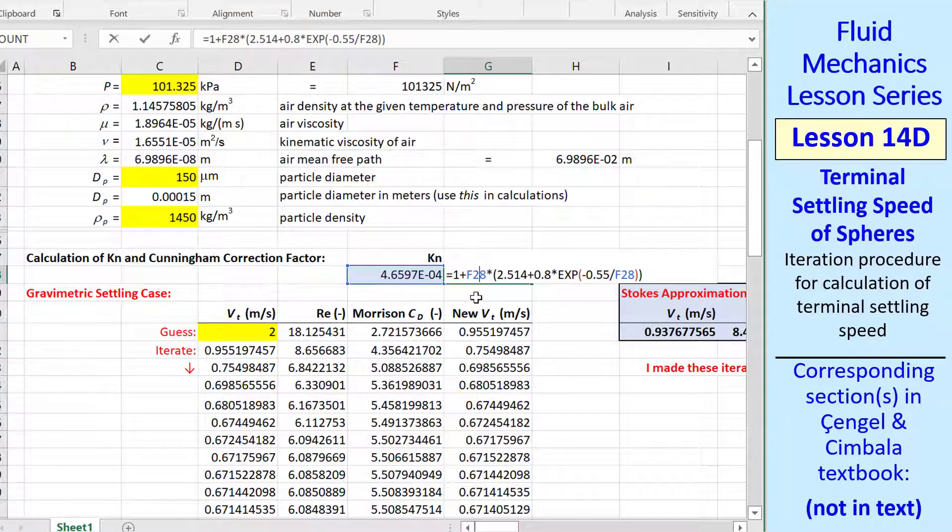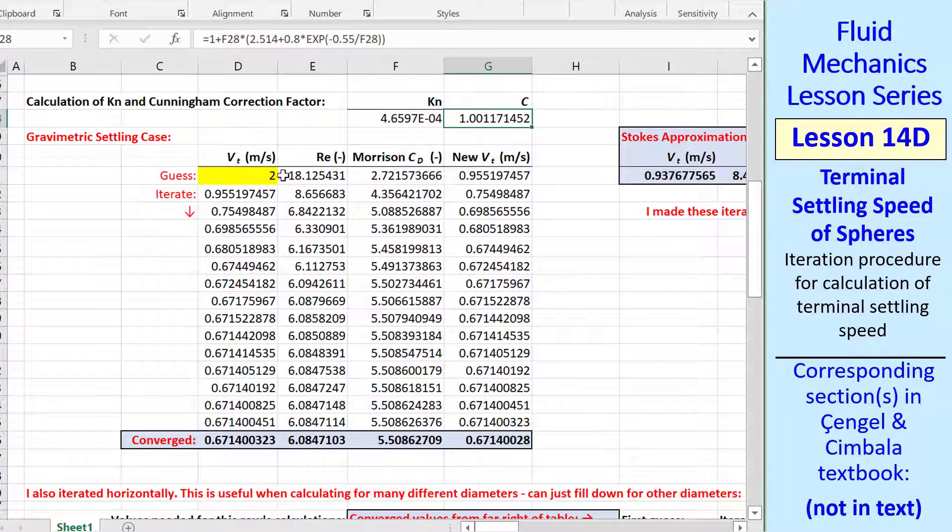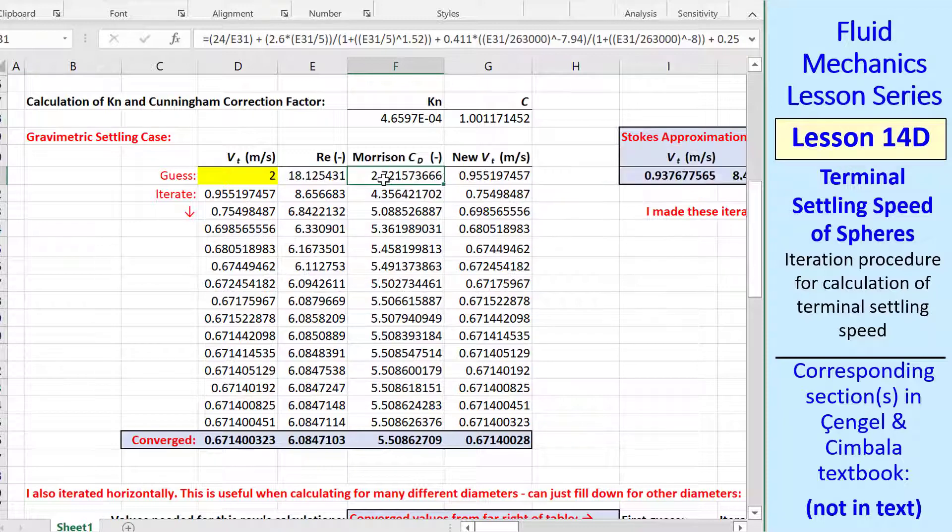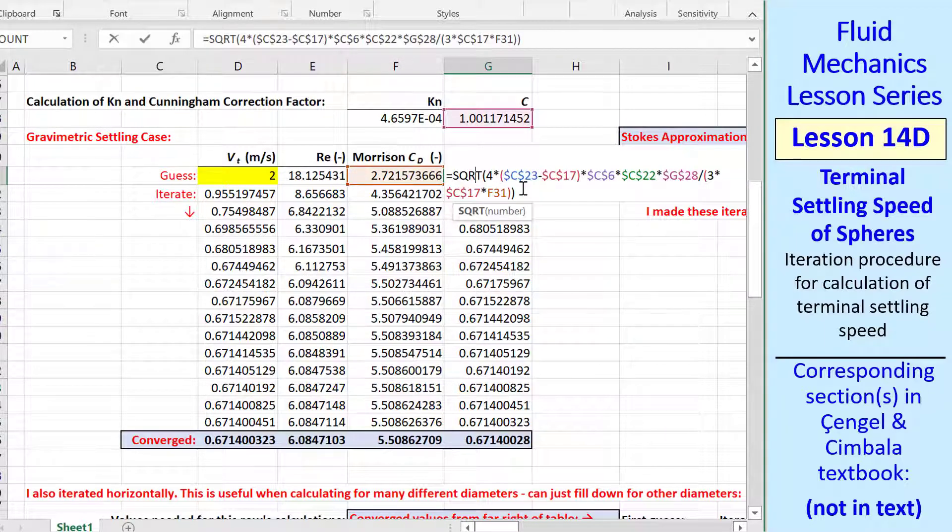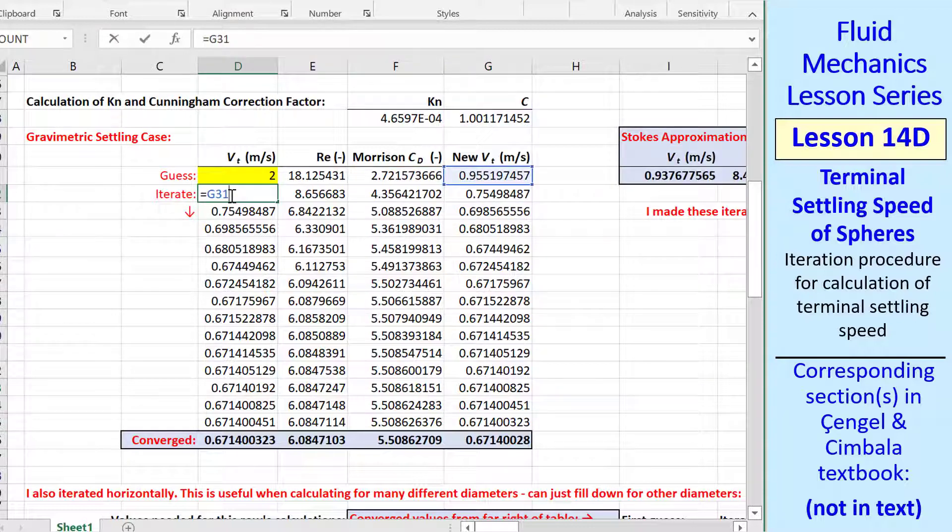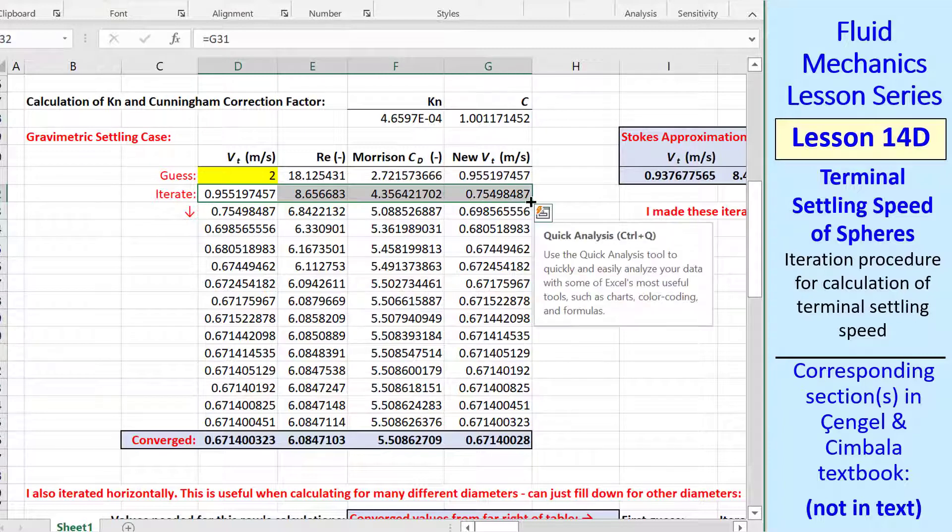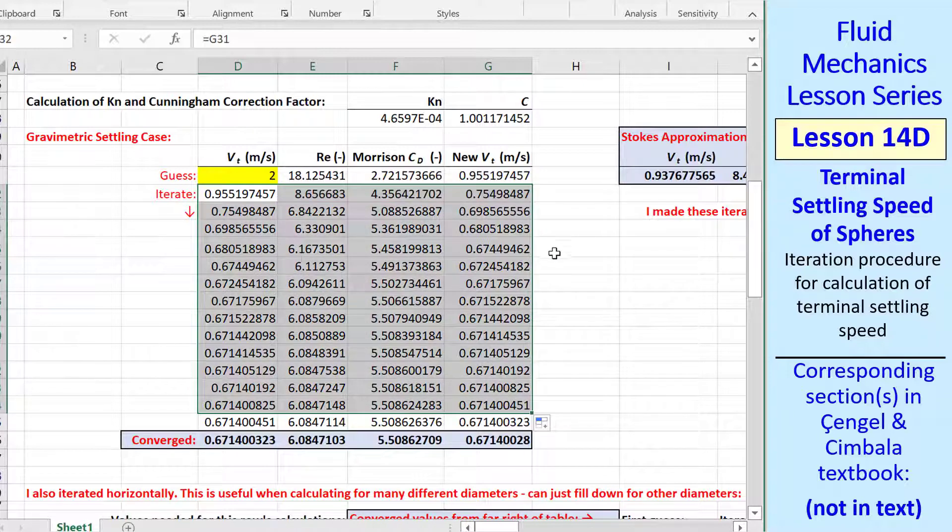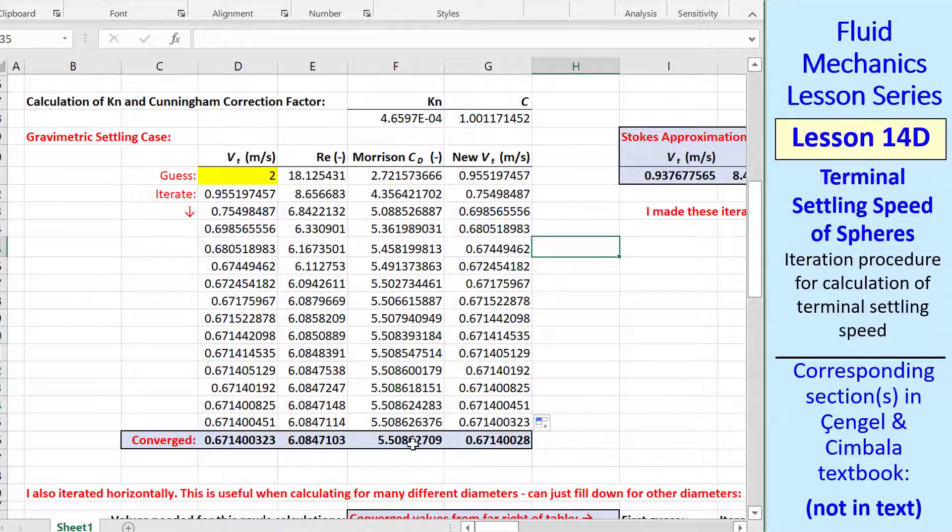Then I calculate Cunningham correction factor. And here I set up my iteration procedure, my first guess, my Reynolds number, the Morrison drag coefficient, which is a huge equation for Excel. But again, once you set it up, and it always refers to a Reynolds number to the left, you should never have to set it up again. Then the new vt from that square root equation that I showed you. And then my second guess is this previous calculation. Once you have this set up, you grab this little box to fill in these cells, which I had already done beforehand, so nothing has changed. And we get our converged values.